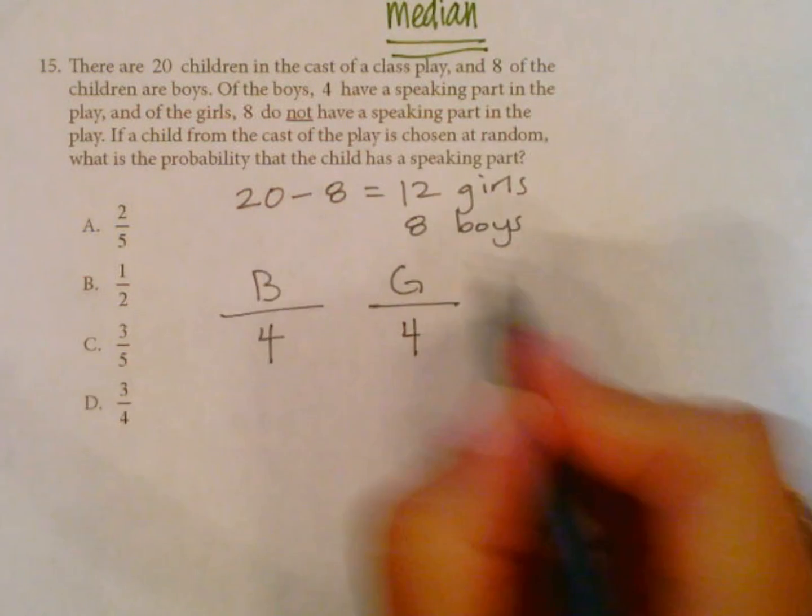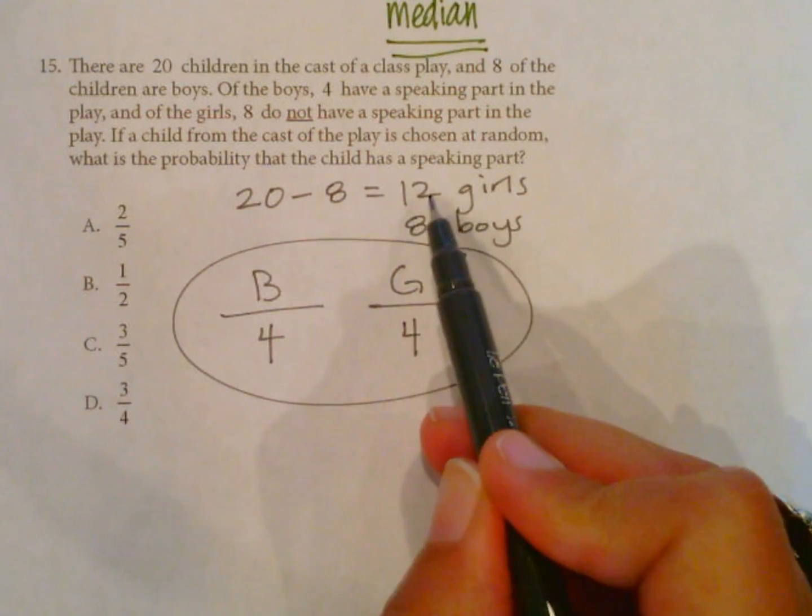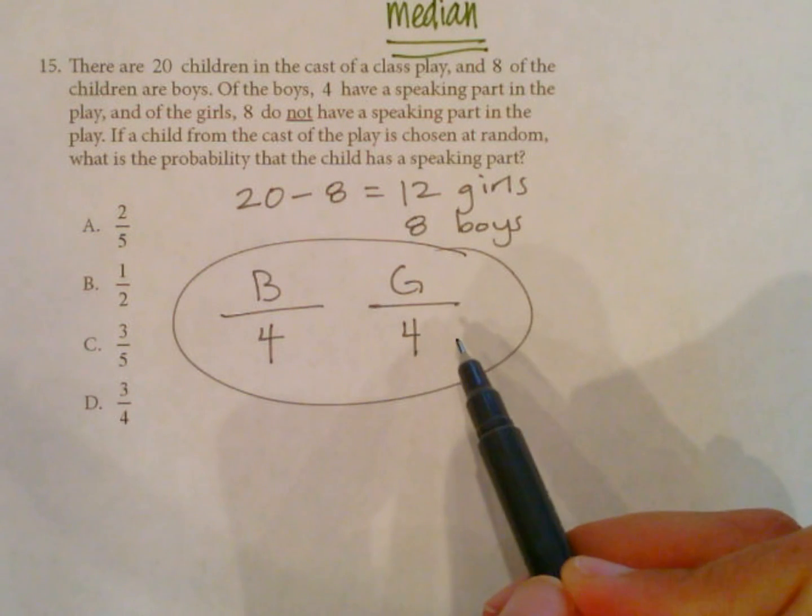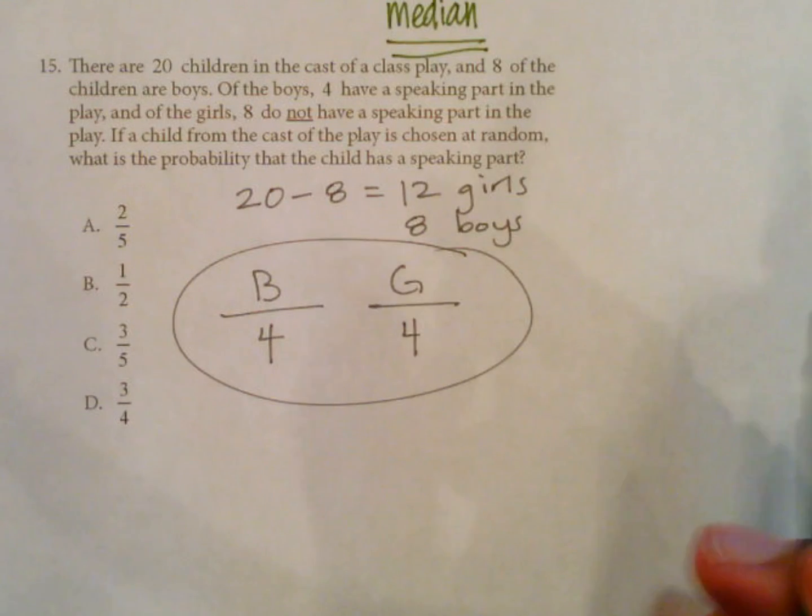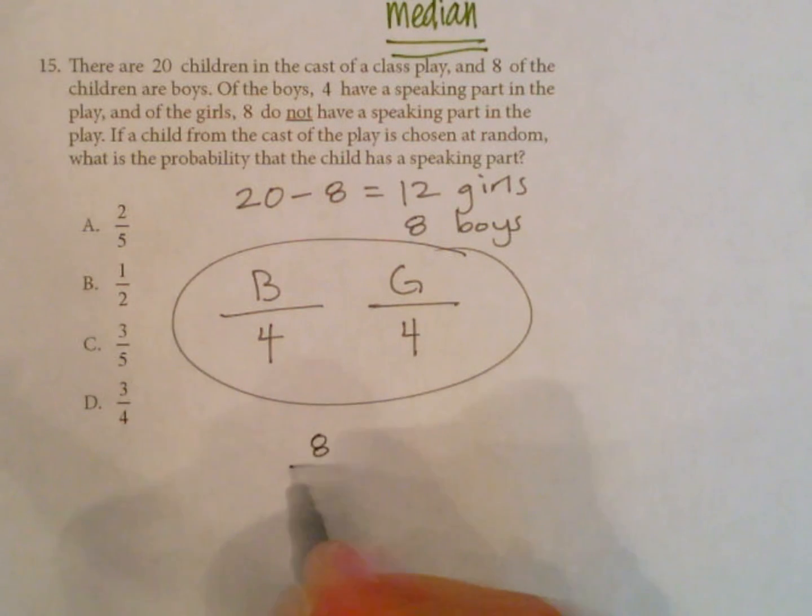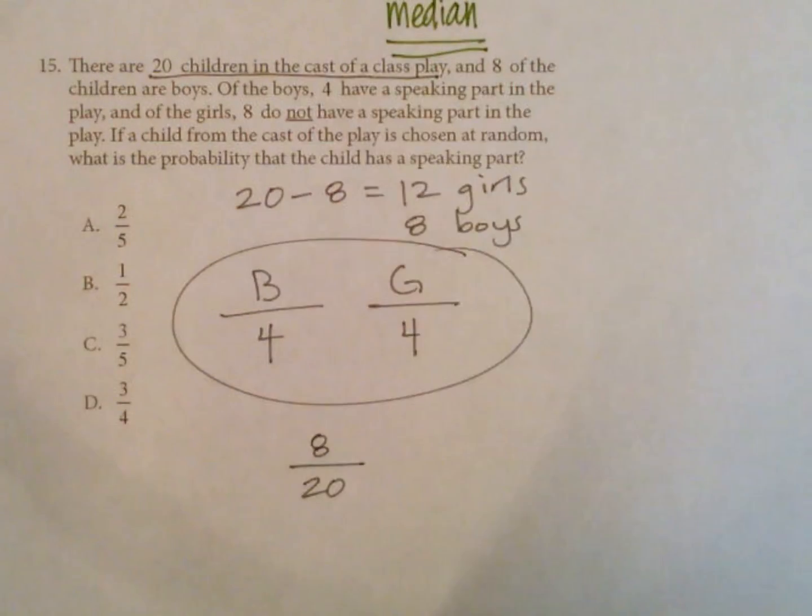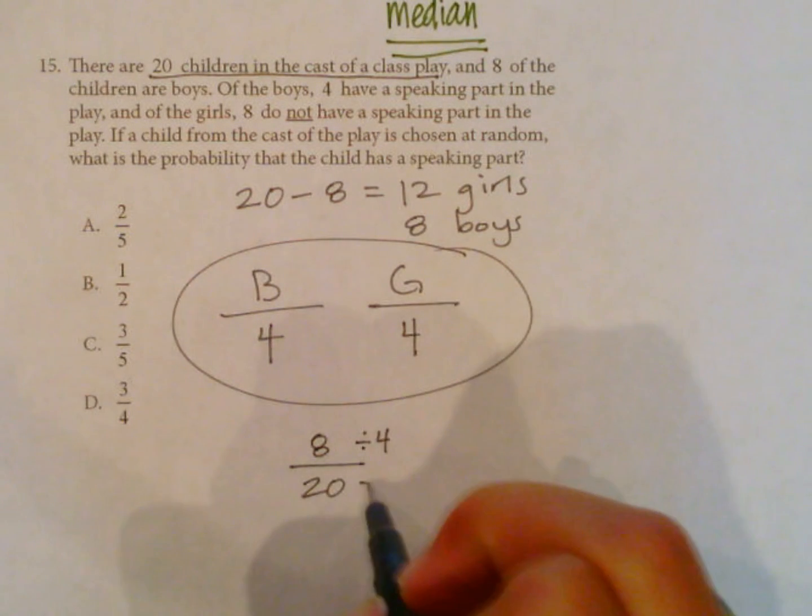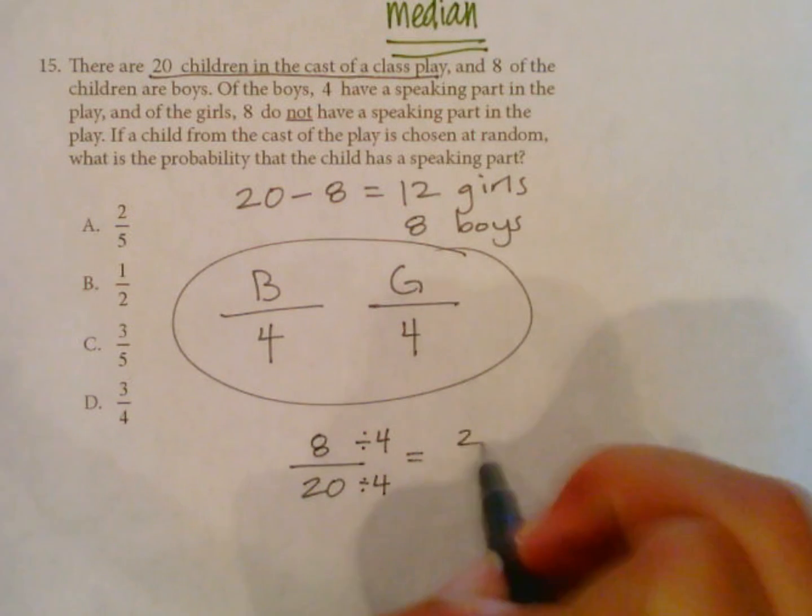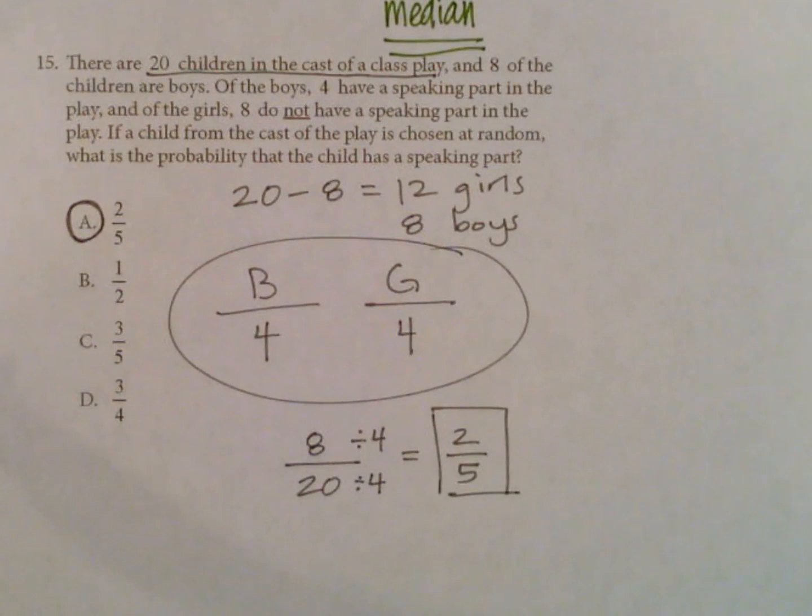So here's our speaking roles: four boys and then eight from 12 leaves four girls. If a child from the cast of the play is chosen at random, what is the probability that the child has a speaking part? Okay, so we're going to add these two up, so that's eight. There's eight speaking parts out of a total of 20 children that were cast in the class play. So eight over 20 will be our probability, and we can divide those both by four to reduce this. That will leave two out of five as our answer. So the answer is A. Good luck studying.